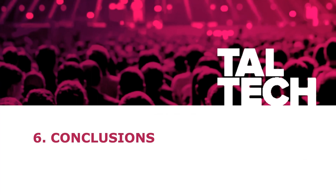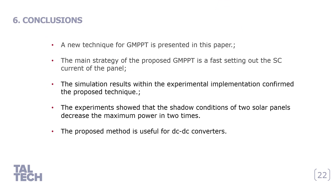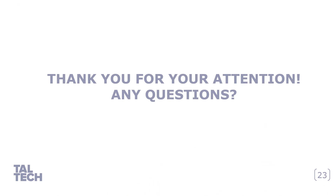Finally, let's summarize the main results. A new technique for global MPPT was presented in this paper. The main strategy is fast setting of the short circuit condition. The simulation and experimental results confirm the proposed technique. The experimental results showed that the shadowing condition decreased the maximum power by two times. The proposed method is useful for DC-DC converters. Thank you for your attention — if you have any questions, I will be happy to answer.